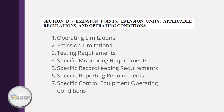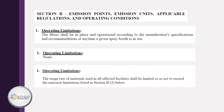For example, Part 1 covers the operating limitations. Here are three examples. The first operating limitation provides an actual limitation — the filters are to be in place and operational according to manufacturer's specifications any time the booth is in use. The second example shows there are no operating limitations associated with the emission point. The last example refers us to another section of the permit to find the applicable operating limitations.